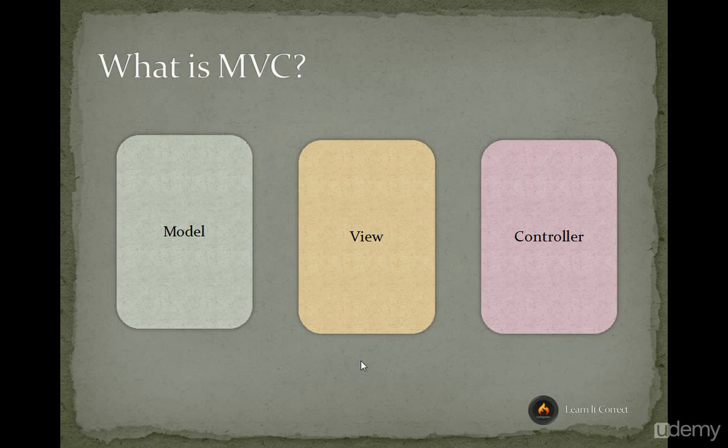In programming, rather than creating everything in a single code base, we separate it into three sections: Model, View, and Controller. The Model is where you have the logic, database connectivity, and algorithms. The View is where you have the UI, HTML pages, and display elements.